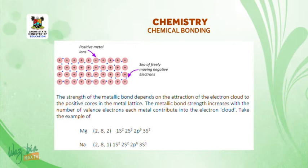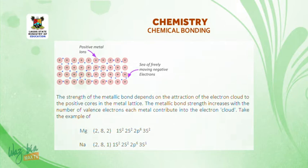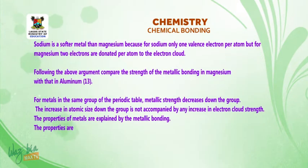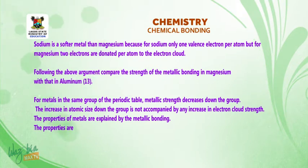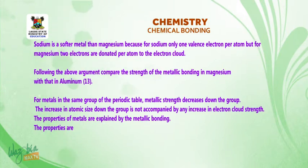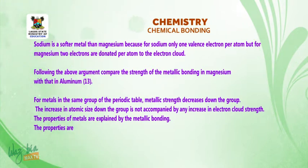For example, magnesium has the configuration 2-8-2, while sodium has 2-8-1. Sodium is a softer metal than magnesium because sodium contributes only one valence electron per atom, whereas magnesium donates two electrons per atom to the electron cloud. Following this argument, compare the strength of metallic bonding in magnesium with that in aluminium (atomic number 13). For metals in the same group of the periodic table, metallic strength decreases down the group, as the increase in atomic size is not accompanied by any increase in electron cloud strength.